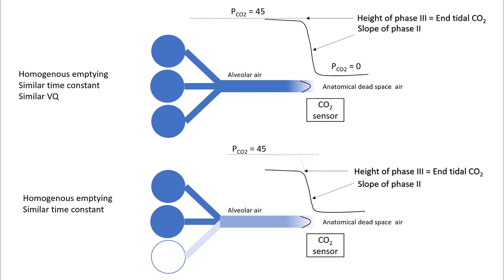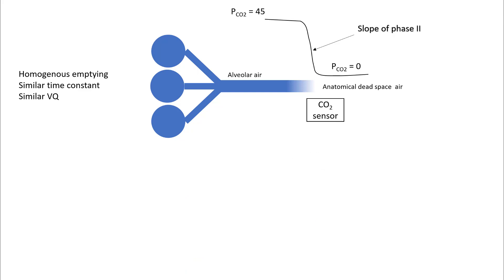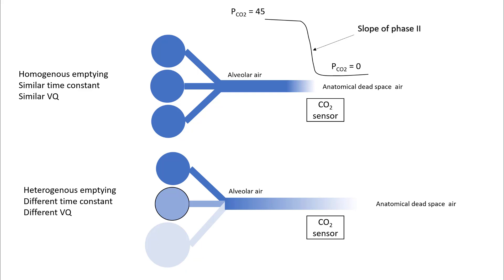In the second scenario, let's look at heterogeneous emptying with alveoli with different time constants and different VQ ratios. When you exhale, the alveolar air is now a mixture of different types of alveoli in different phases of expiration. Alveoli with smaller time constants will tend to empty rapidly compared to ones with longer time constants.